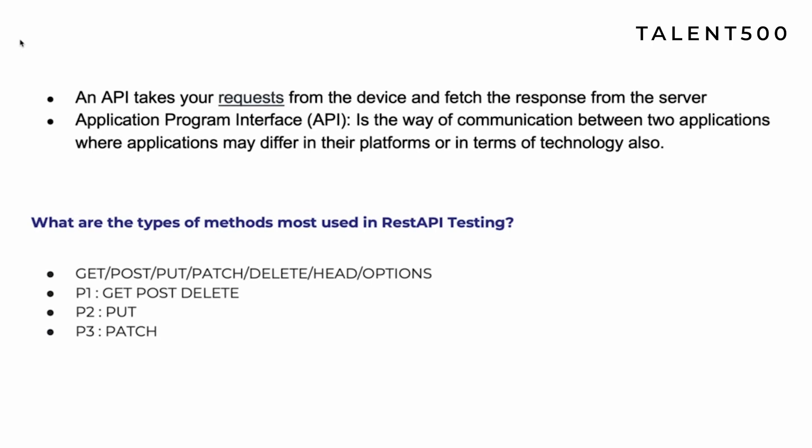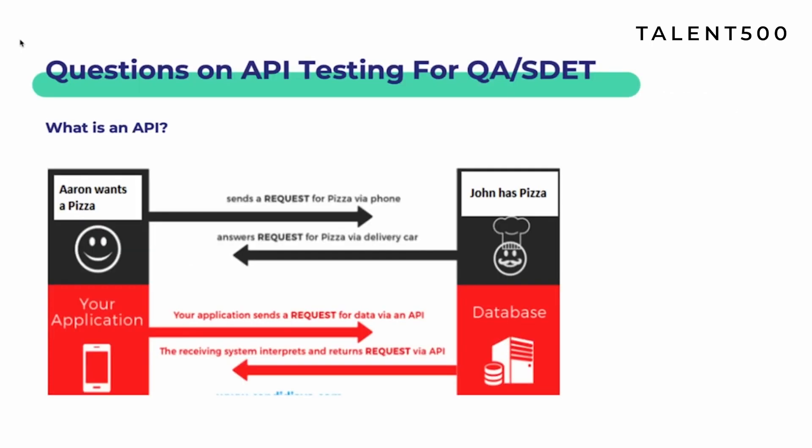API usually means Application Programming Interface. It is the way of communication between two applications. In an easier way, you can say that it is a middleman between your front end and back end — it takes the request from the front end, sends it to the back end, the back end processes the request, and then sends the response back to the front end through the API.